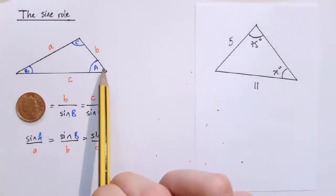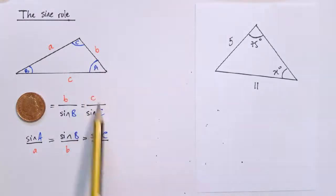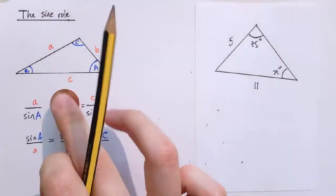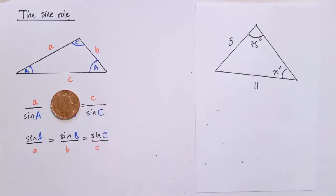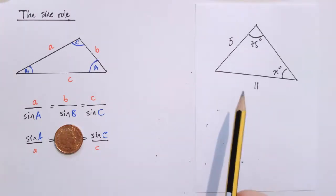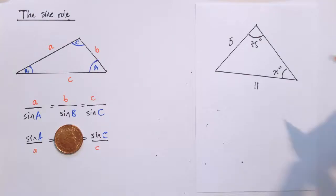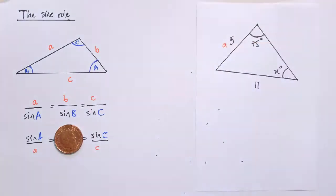So it's really just saying we can look at any two pairs that correspond A and A, C and C, say, and use that part of the rule. And if it's more convenient we can flip it upside down and use the rule this way up instead. So here's an example on the right. We've got a triangle with lengths 5, 11, 75 and X. So let me just label all of the sides.